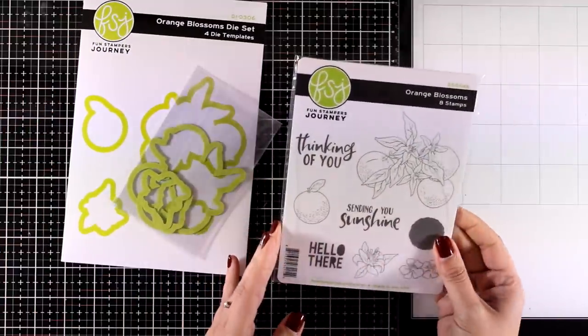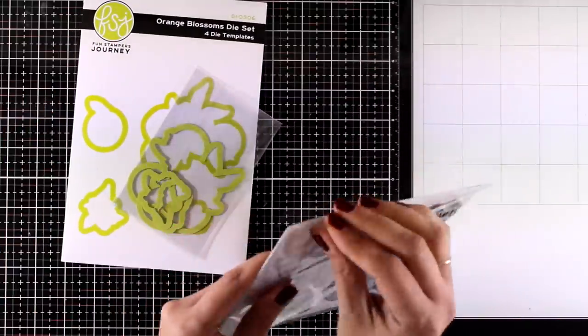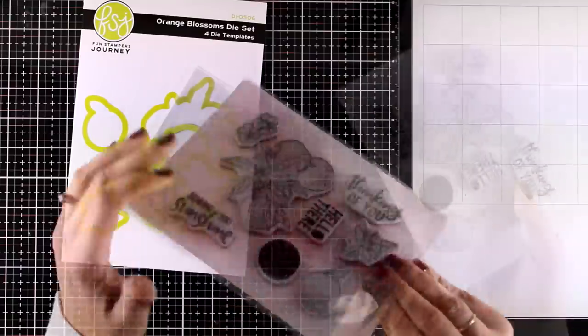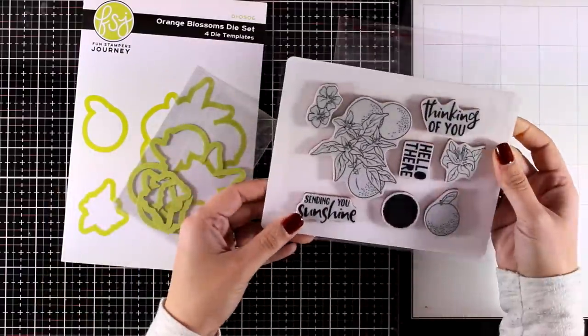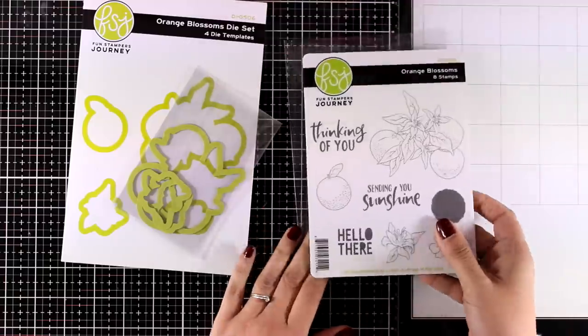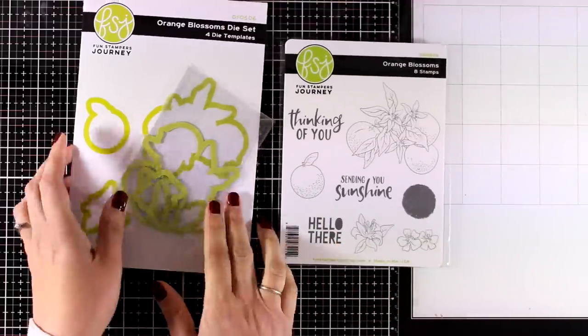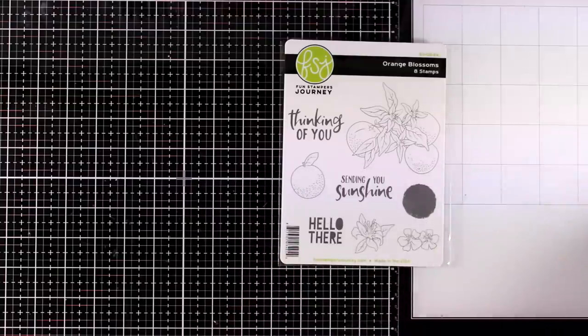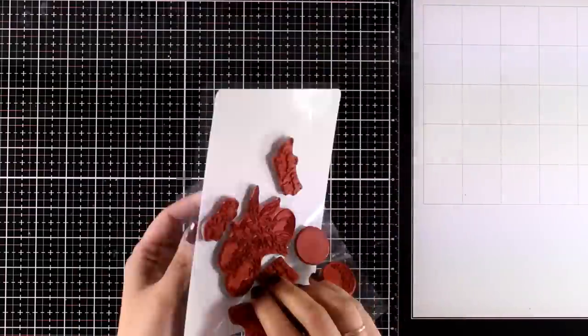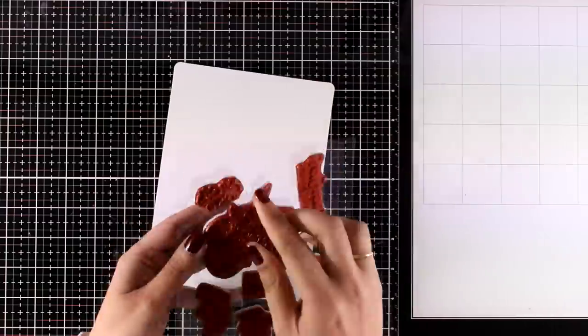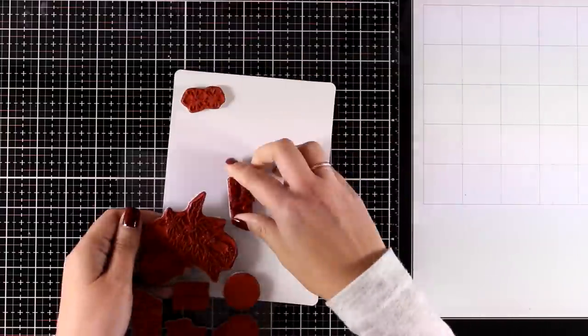This is what you get if you subscribe to this club. You'll get a lovely stamp set and a matching die. Now the stamp set this month is called Orange Blossoms. It comes with eight stamps, the oranges, the blossoms, as well as three sentiments. These are rubber stamps that cling on your stamping blocks, great quality, and I love the fresh look of this stamp set.